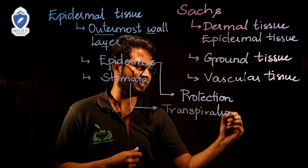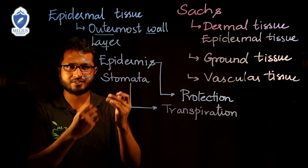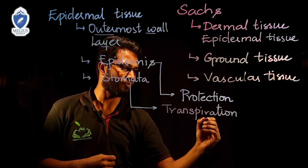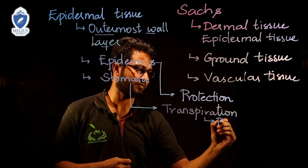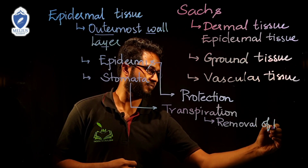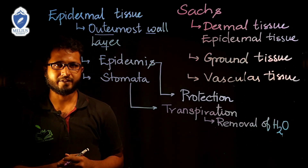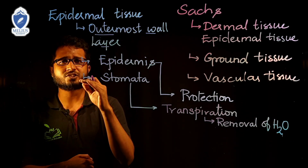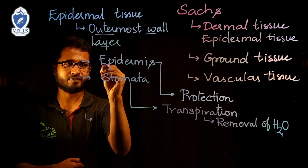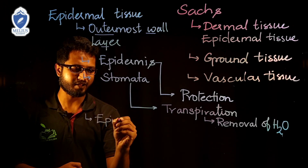The minute pores help in evaporation of water, which is known as transpiration. Transpiration is the removal of water from aerial parts of the plant, mainly through stomata. Moving ahead, there are also extra outgrowths seen on the epidermal layer.